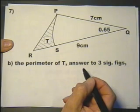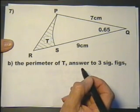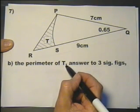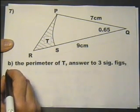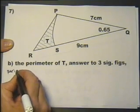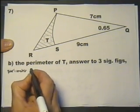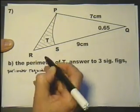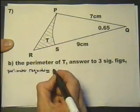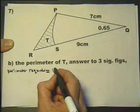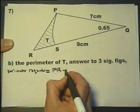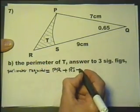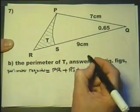Question seven part B: find the perimeter of the shaded area T. So the perimeter required equals PR plus RS plus PS.